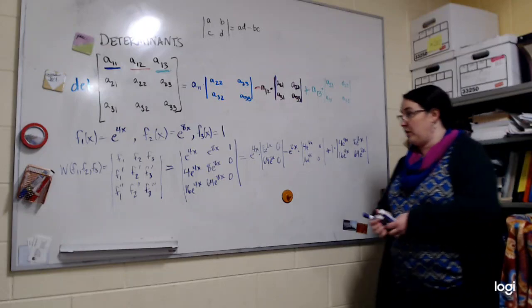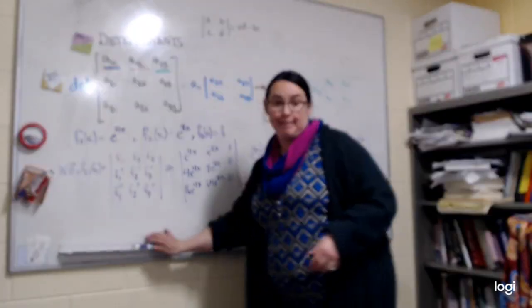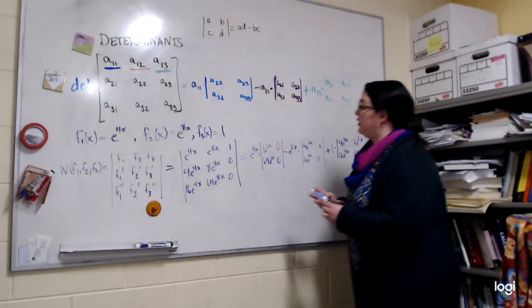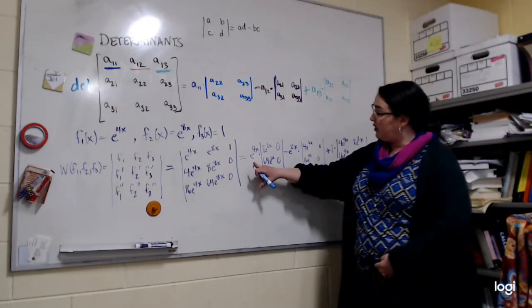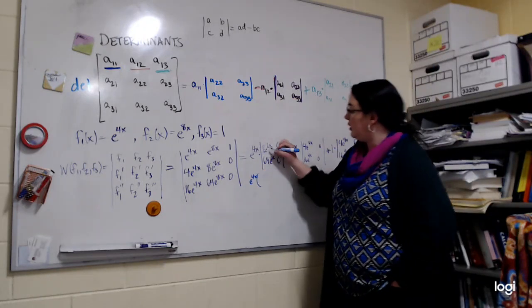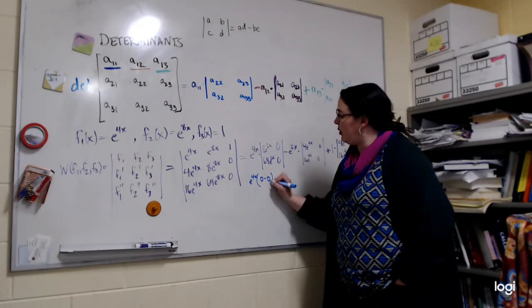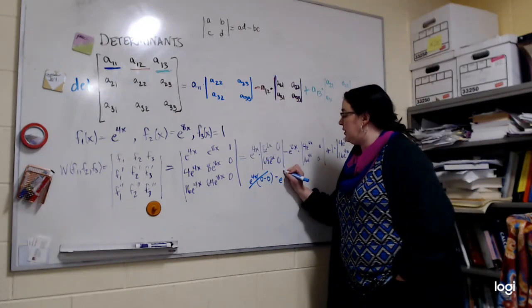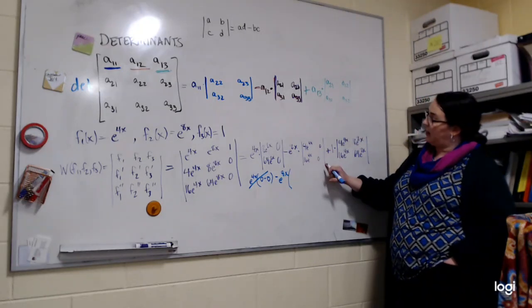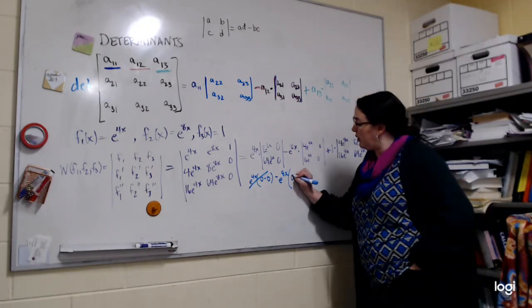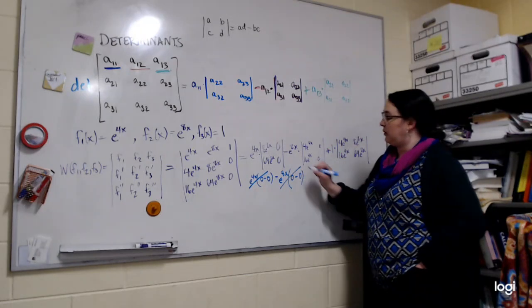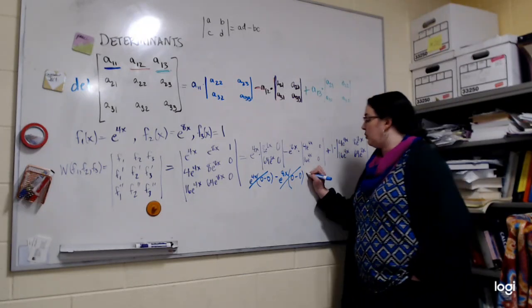So what do we get out of here? Let's see what the Wronskian is. How did this 3 by 3 turn out? Well, this is e to the 4x times, let's play across, 0 minus 0. Oh, that whole thing is 0. Minus e to the 8x times, let's play across, down like this, diagonally, 4 times 0, minus 16e to the 4x times 0, 0. Oh, that's 0.